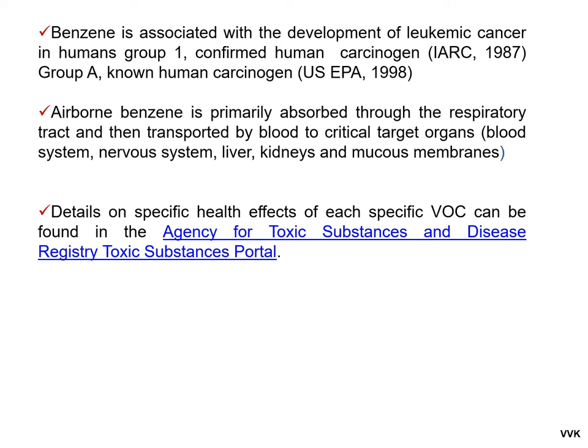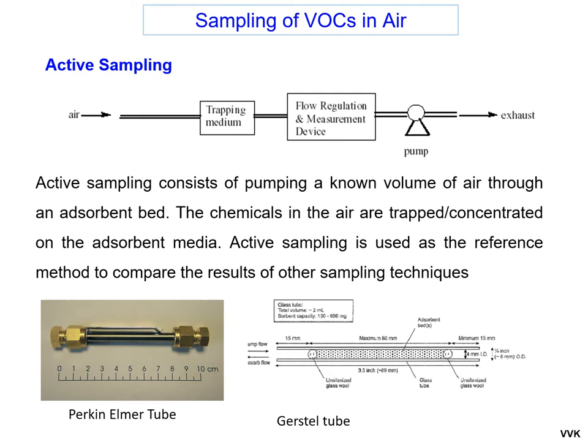Benzene is associated with the development of leukemic cancer in humans. It is included in Group 1 as a confirmed human carcinogen by the International Agency for Research on Cancer, and in Group A as a known human carcinogen by the US EPA. Airborne benzene is primarily absorbed by the respiratory tract and then transported by blood to critical target organs like the blood system, nervous system, liver, kidneys, and mucous membrane.